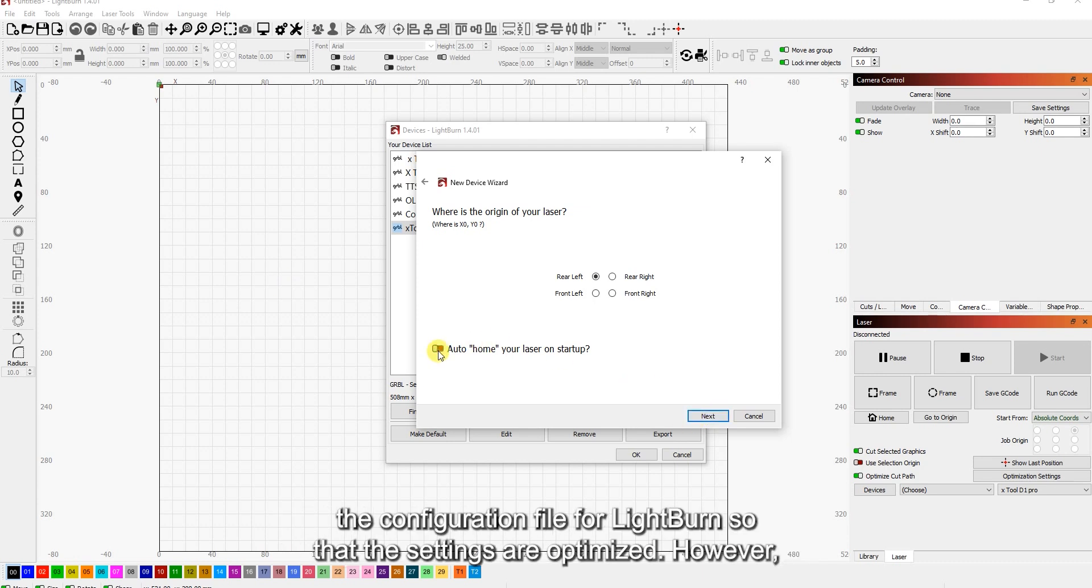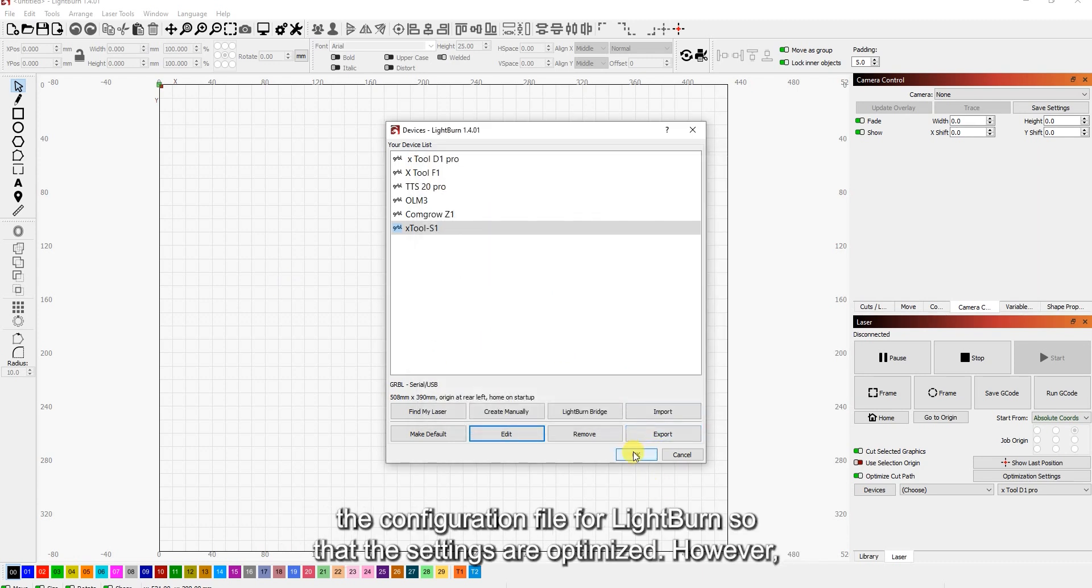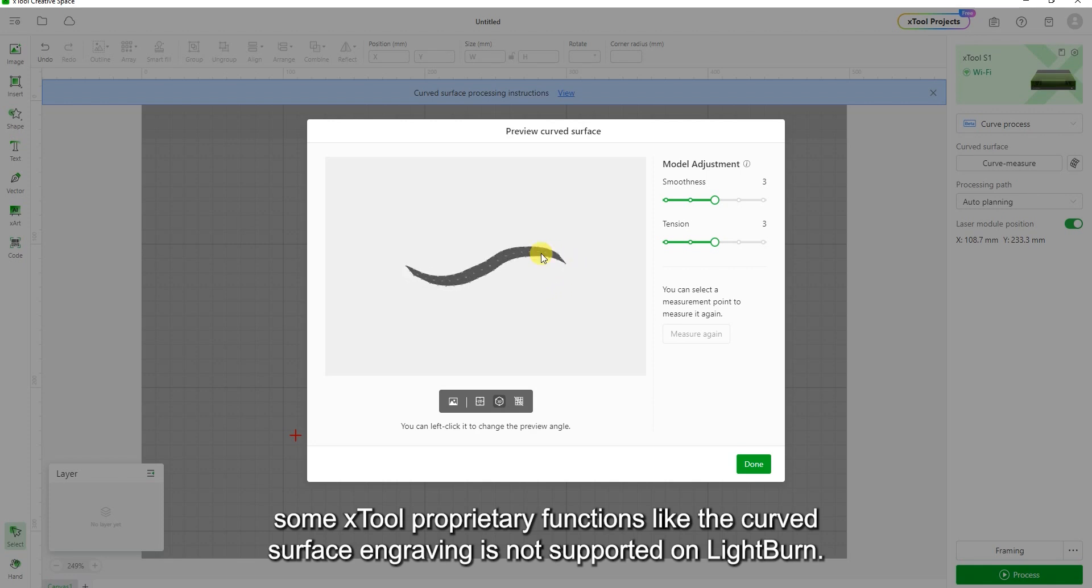Xtool provides the configuration file for Lightburn so that the settings are optimized. However, some Xtool proprietary functions like the curved surface engraving is not supported on Lightburn.